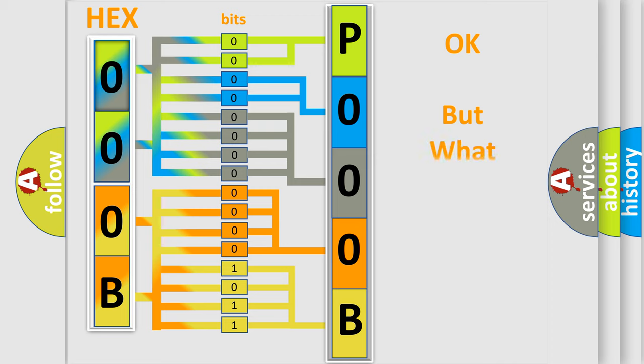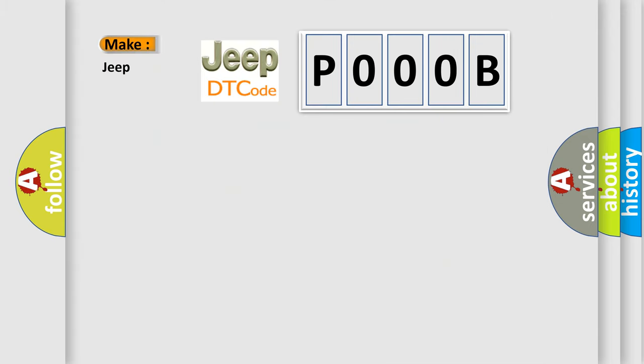We now know in what way the diagnostic tool translates the received information into a more comprehensible format. The number itself does not make sense to us if we cannot assign information about what it actually expresses. So, what does the Diagnostic Trouble Code P000B interpret specifically for Jeep car manufacturers?